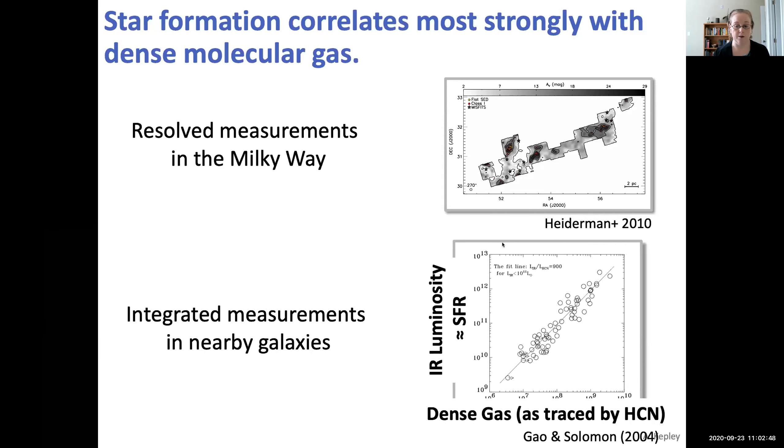Also, integrated measurements in nearby galaxies. And this plot is from a very famous paper by Gao and Solomon in 2004, showing the dense gas. Here they've traced it using HCN versus the star formation rate, which they've traced using IR luminosity. And those two are fairly tightly correlated.